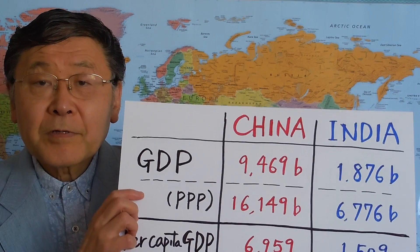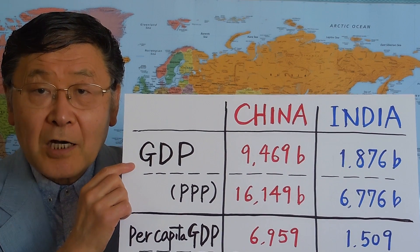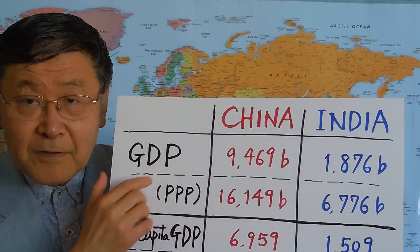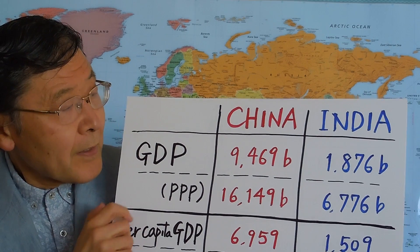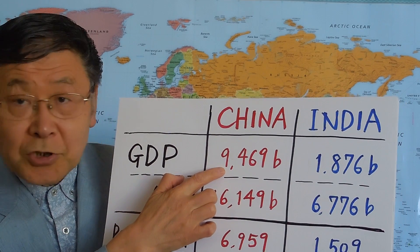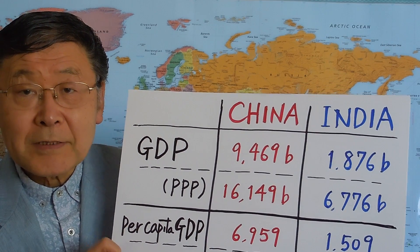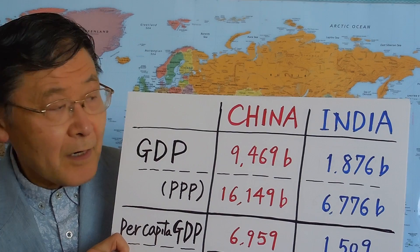Hello. Today I'd like to compare China with India in connection with a comparison between state capitalism and market capitalism. First, in terms of GDP — the size of the economy — China, as a representative of state capitalism, has a very large GDP compared to that in India, which is a representative of market capitalism.